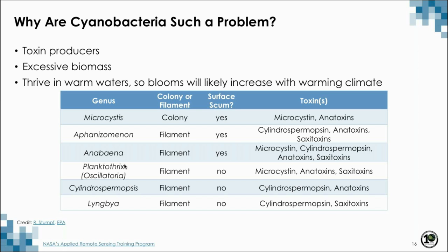Please look at the colony or filament column. Whether a genus forms amorphous globules or straw-like bundles, even at a microscopic scale, can have a big impact on optical backscattering spectra. Backscattering is one of the inherent optical properties in the remote sensing reflectance function. The difference in globules versus straw-like structures may be just enough for the spectral signal of one genus like microcystis to be distinguishable from another, such that in lake systems where one genus always precedes the highly toxic microcystis, remote sensing observations could be used to forecast microcystis blooms.